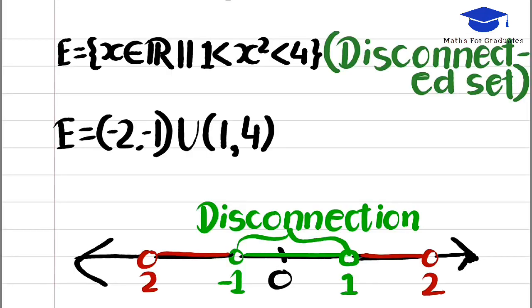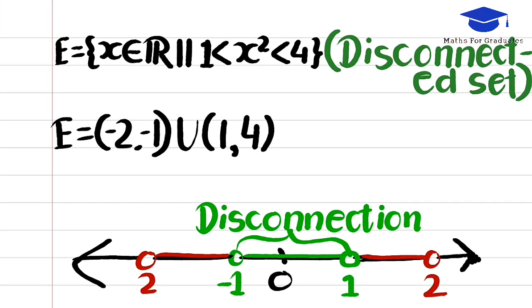You don't get it? See another example carefully. Set E can be represented as union of two open sets, hence E is disconnected. For more clarification, see the representation of E on the real line. You can see the disconnection.